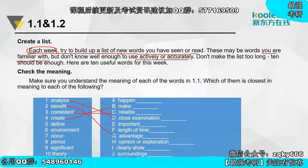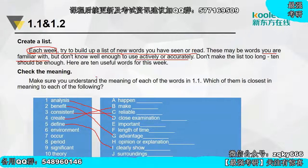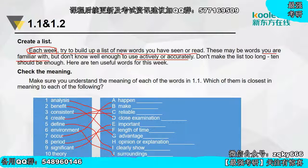Define，去定义一个东西，如果一个东西define得很清楚，就叫做clearly show。Environment是环境、周遭的情况，对应surroundings。Occur动词发生，很简单，是happen。Period一段时间，就是length of time。Significant很重要的，是important。Theory一个理论，剩下的就是opinion or explanation——一个观点加上一个解释，合起来就是理论的意思。